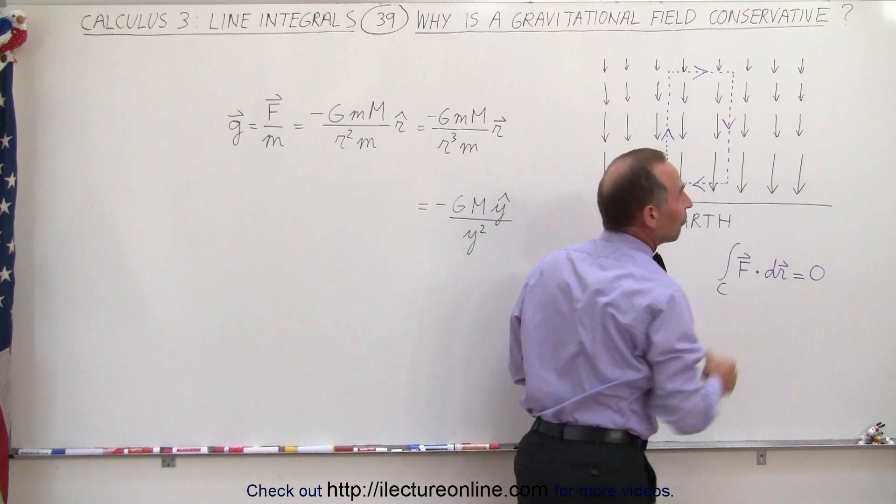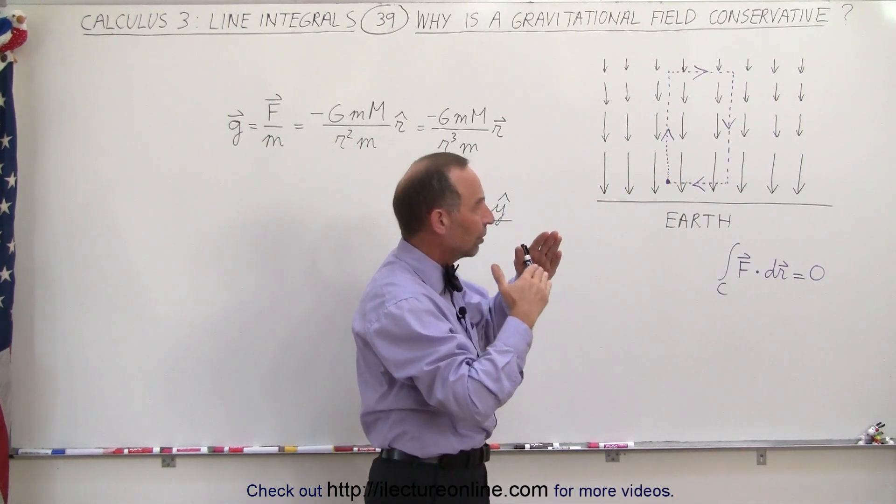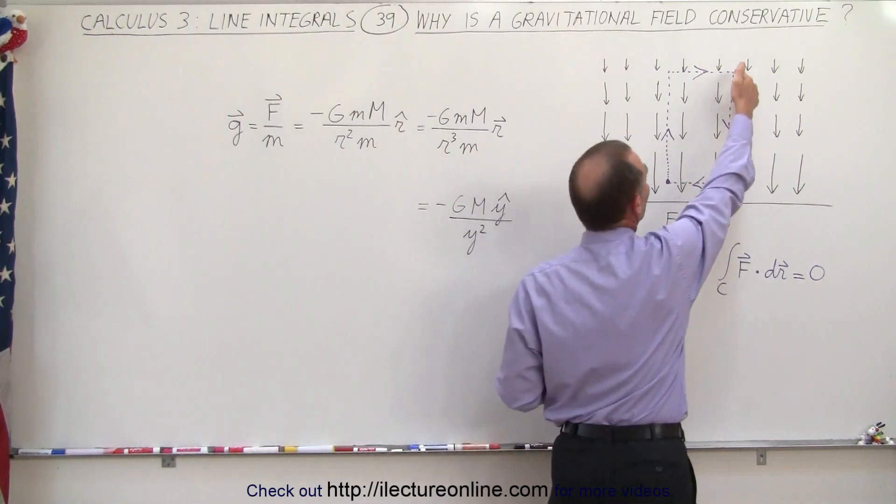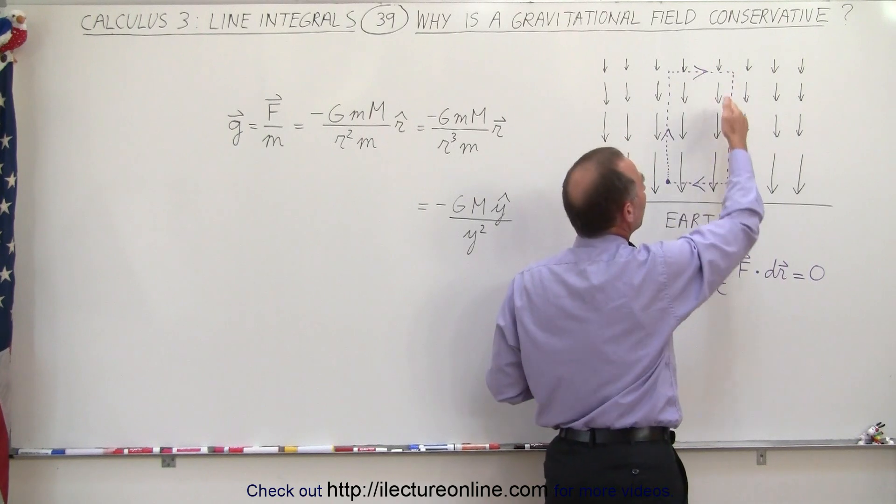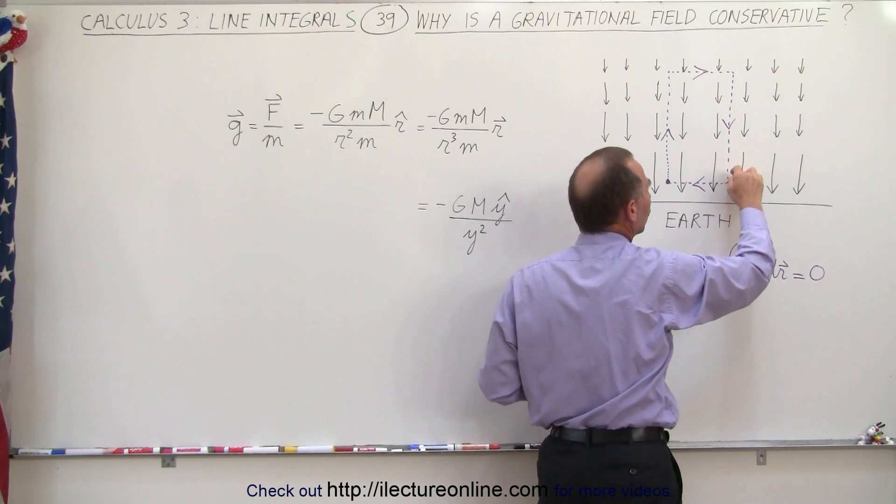As we move across perpendicular to the field, there's neither an addition or subtraction because the angle is 90 degrees and the cosine of 90 degrees is 0. Now here we travel in the same direction, so we are losing potential energy as we're dropping closer and closer to the surface of the earth.